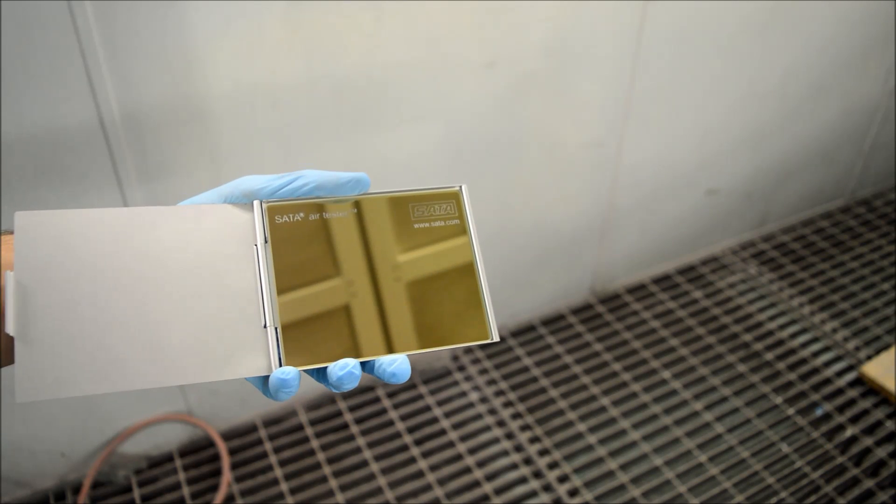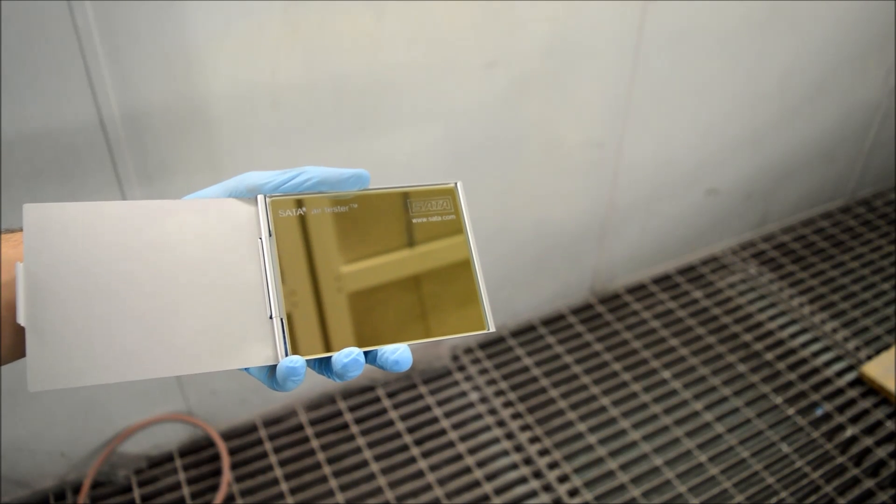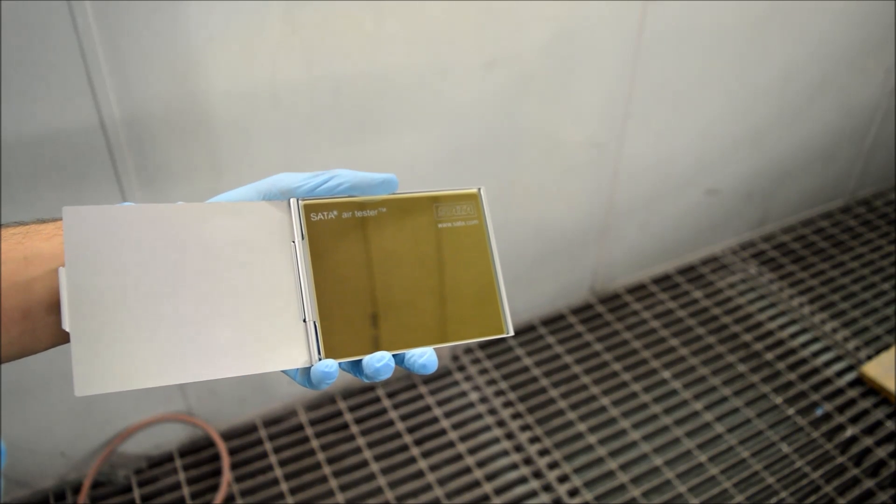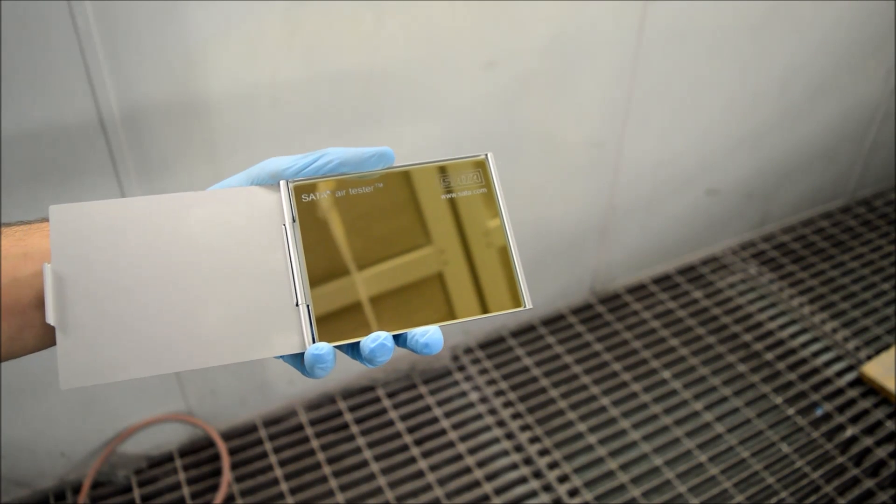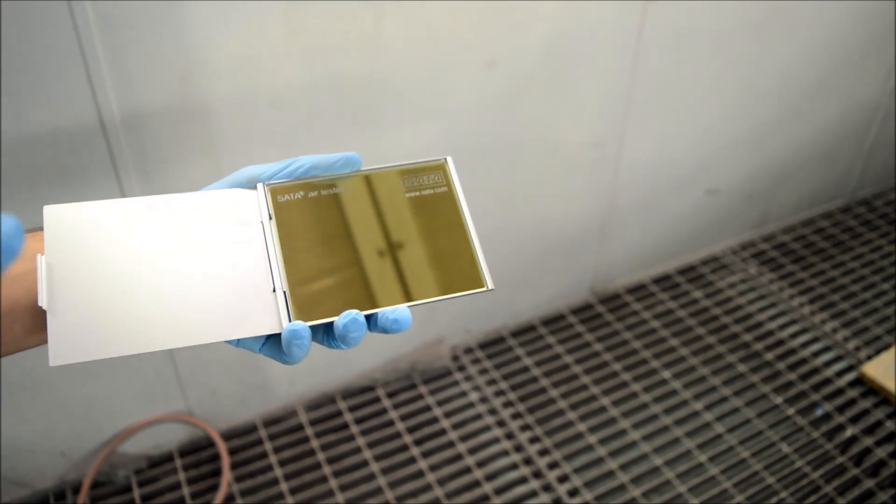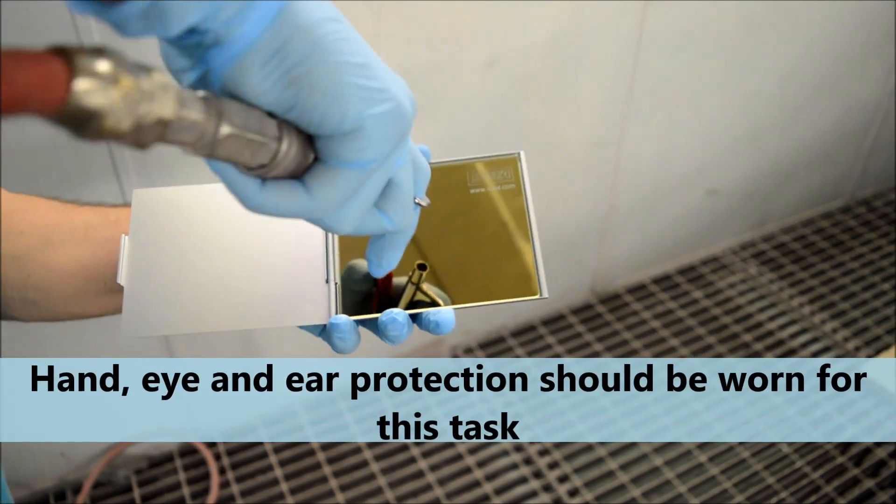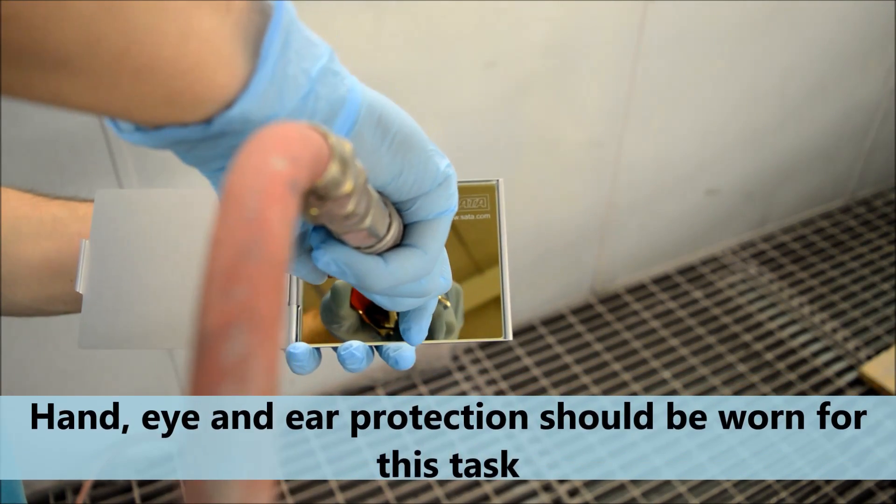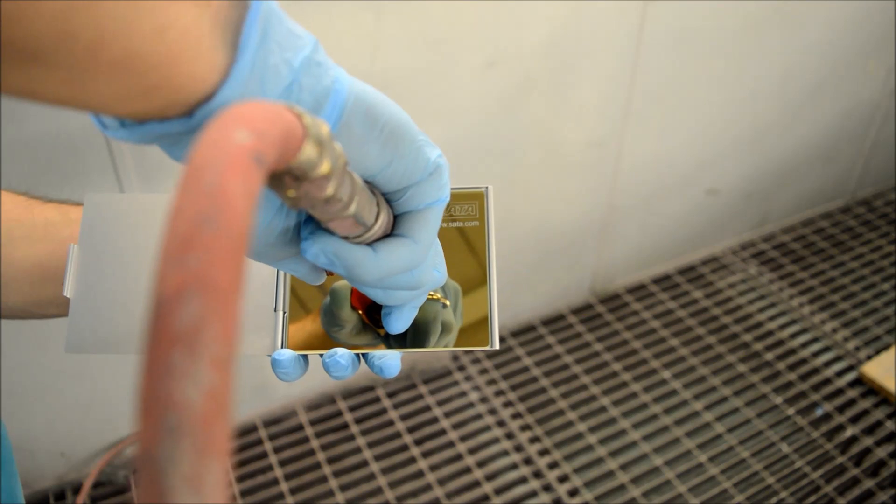All I'm going to do is blow air directly onto the air tester for 30 seconds or thereabouts, and then we'll check to see what's on there. Directly onto the air tester, around five millimeters away, and we'll hold it for 30 seconds.